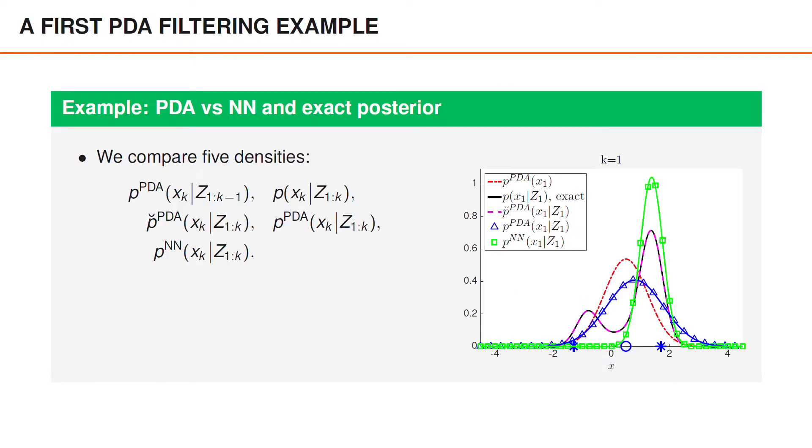To visualize the PDA filter in action, we can see how it compares with the nearest neighbor filter in the two examples that we looked at in the earlier videos. To do this, we will visualize five different densities at every time step. These densities are the predicted density, according to the PDA filter, illustrated using a red point dashed curve, the exact posterior, without any approximations, which is the solid black curve.